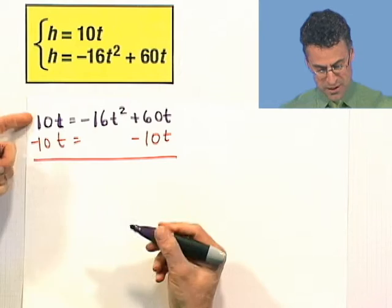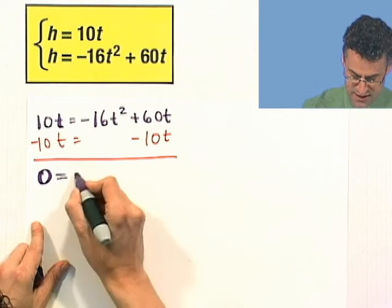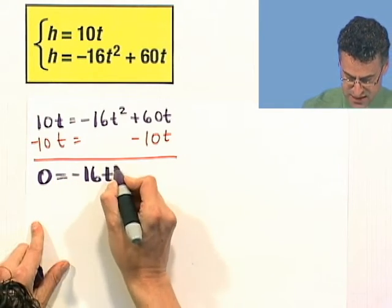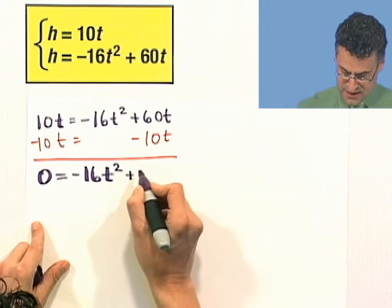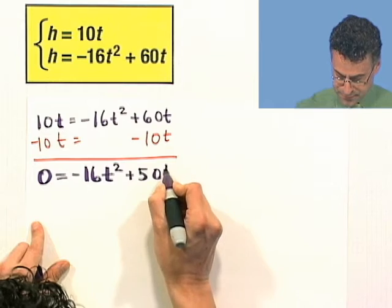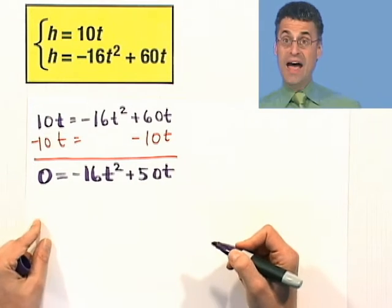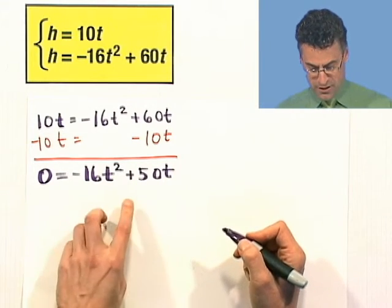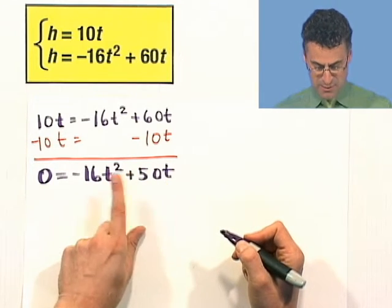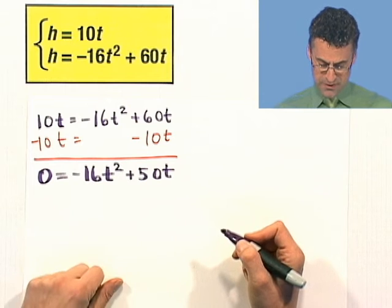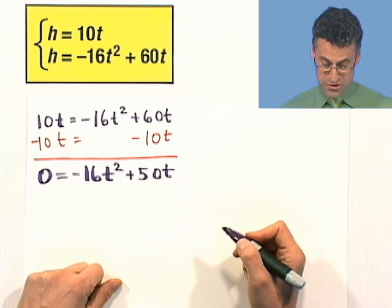And now when you combine these, I get a zero, which I love for quadratics. I get negative 16t squared, and then 60t minus 10t is 50t. Now I want to see if I can factor this. Well, first of all, notice there's a common factor of t everywhere. I'm going to factor out the common factor of t, and I'm also going to factor out the common factor of 2.